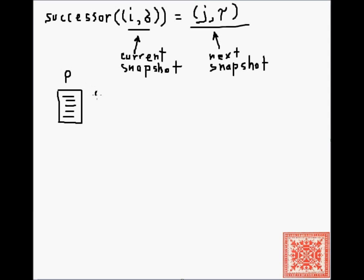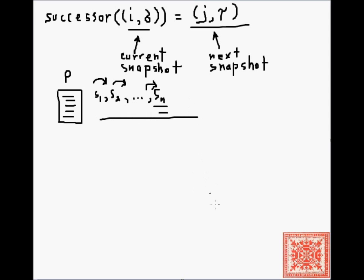So what we're after is a well-defined sequence of snapshots — that's why we're defining the successor function. We start with snapshot one, snapshot two, and continue all the way to some snapshot n, where every subsequent snapshot is the successor of the previous one. This gives us a well-defined sequence of snapshots where we can obtain the next one from the previous one.